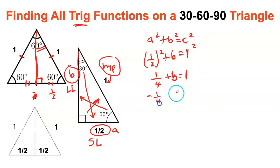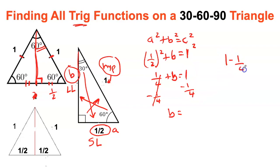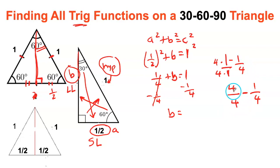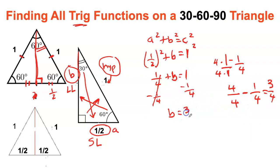From here I do minus one fourth on both sides because I am solving for b. Cancelled out, and I'm gonna have b² equals one minus one fourth. When I'm subtracting or adding fractions, I need to have the same denominator. Therefore I multiply one times four on the bottom and the top. I'll have four times one is four on the top, and the bottom four times one is four. So one unit becomes four over four. Once I have the same denominator, I just subtract the top, which gives me three over four.